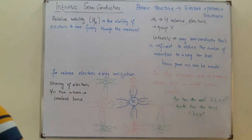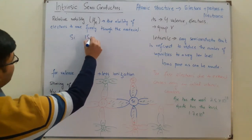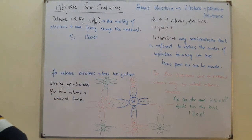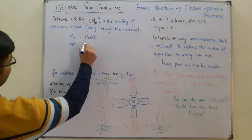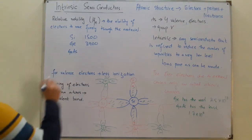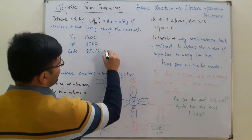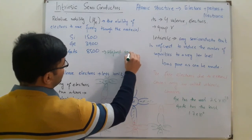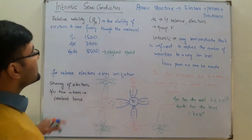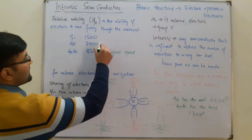Germanium, with a mobility of 3900 cm²/V·s, has more than twice the mobility of silicon, which results in the continued use of germanium in high-speed radio frequency applications. Gallium arsenide, with the highest mobility, is used in the highest-speed electronic applications.